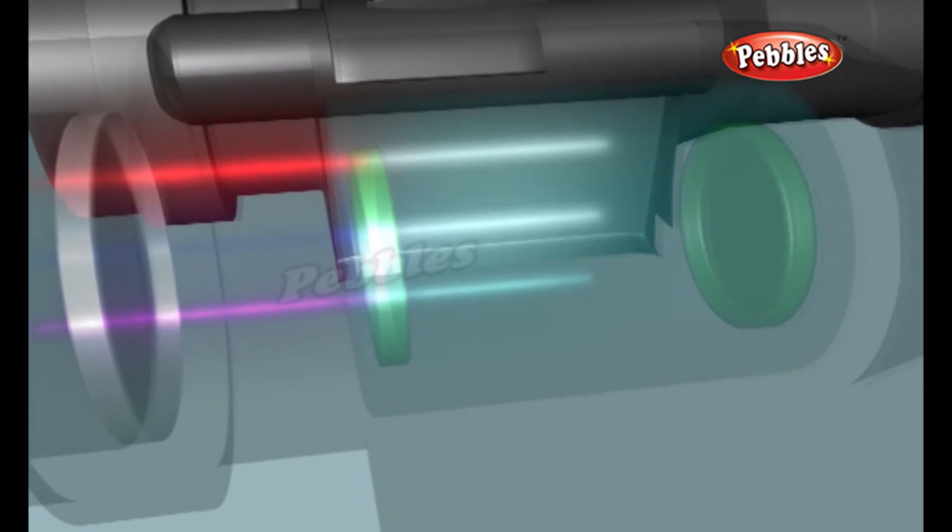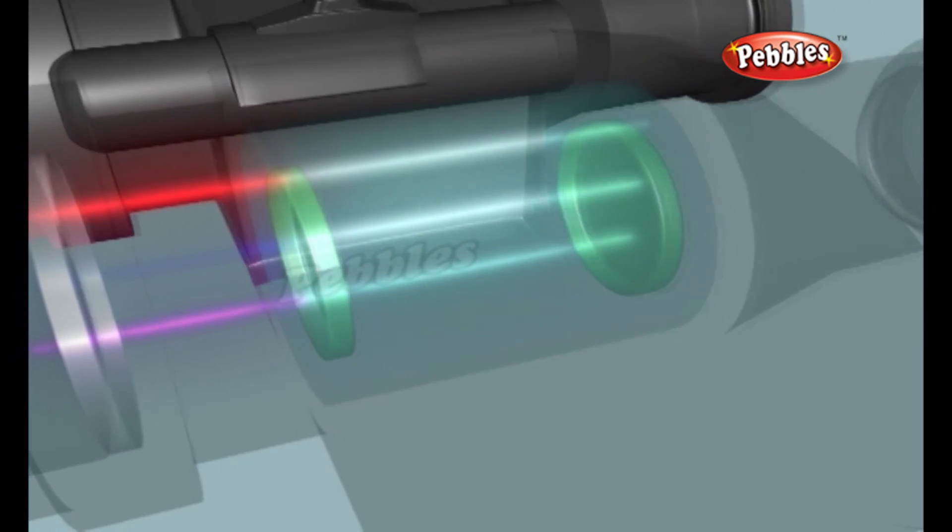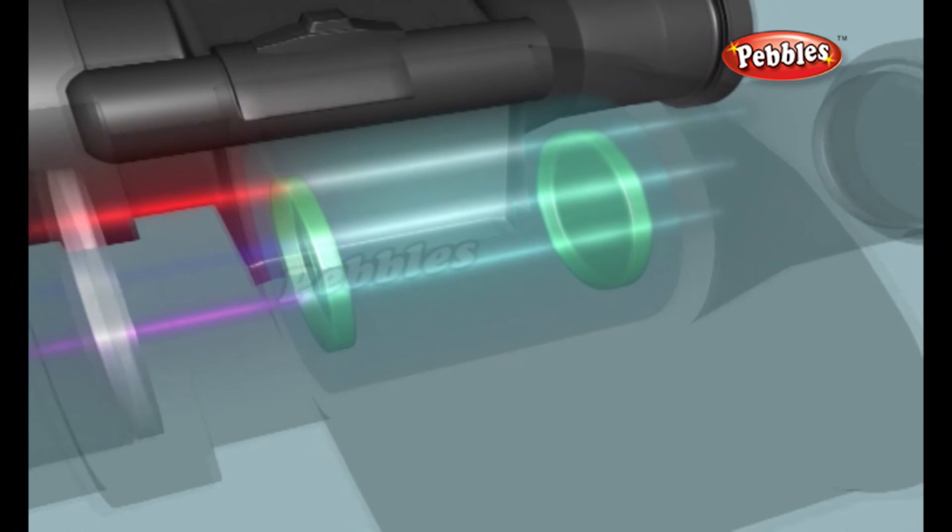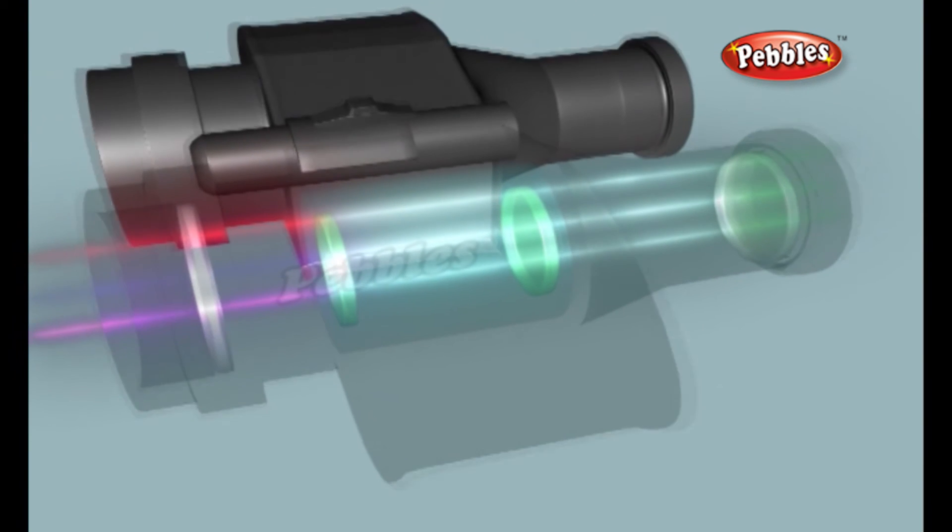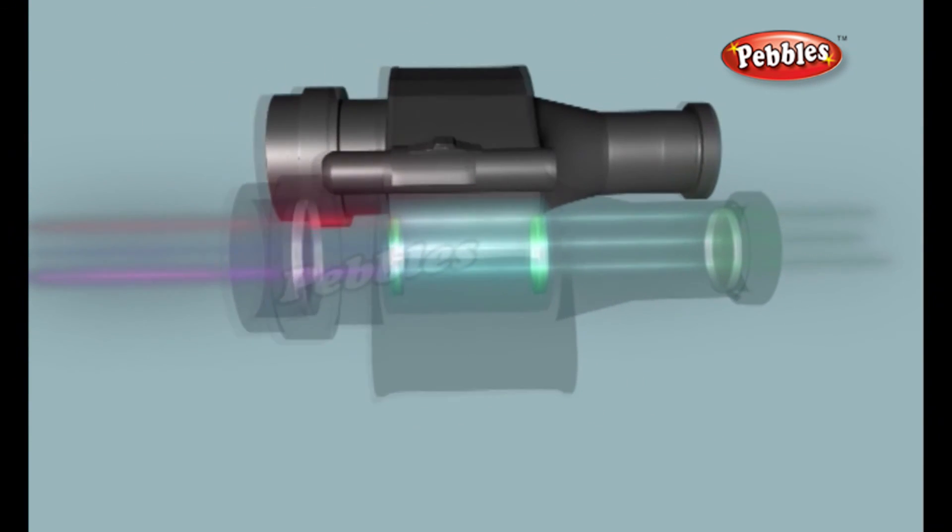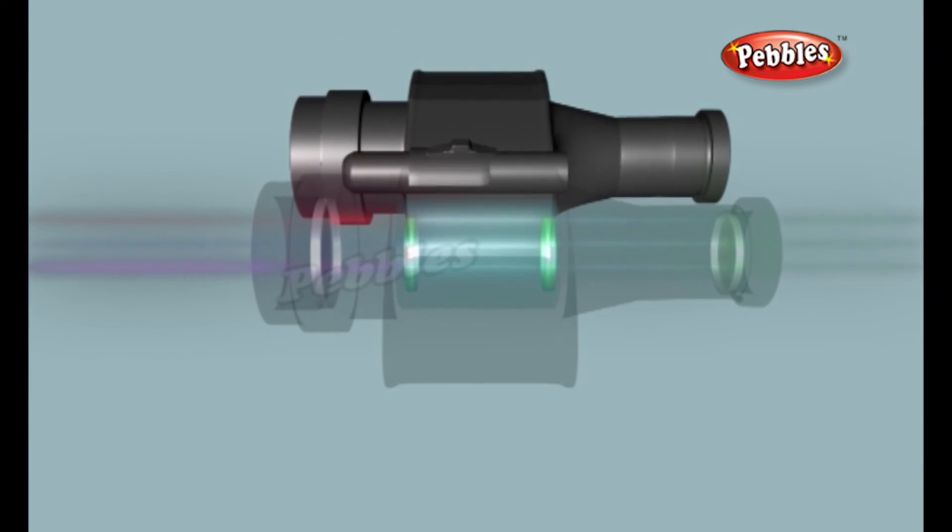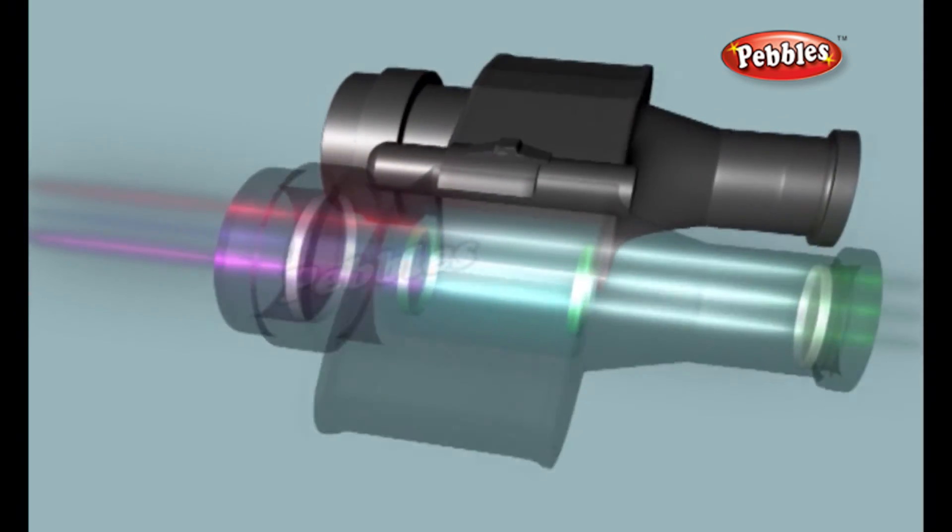Why then don't night vision goggles look black and white? The phosphors on their screens are deliberately chosen to make green pictures because our eyes are more sensitive to green light. It's also easier to look at green screens for long periods than to look at black and white once.